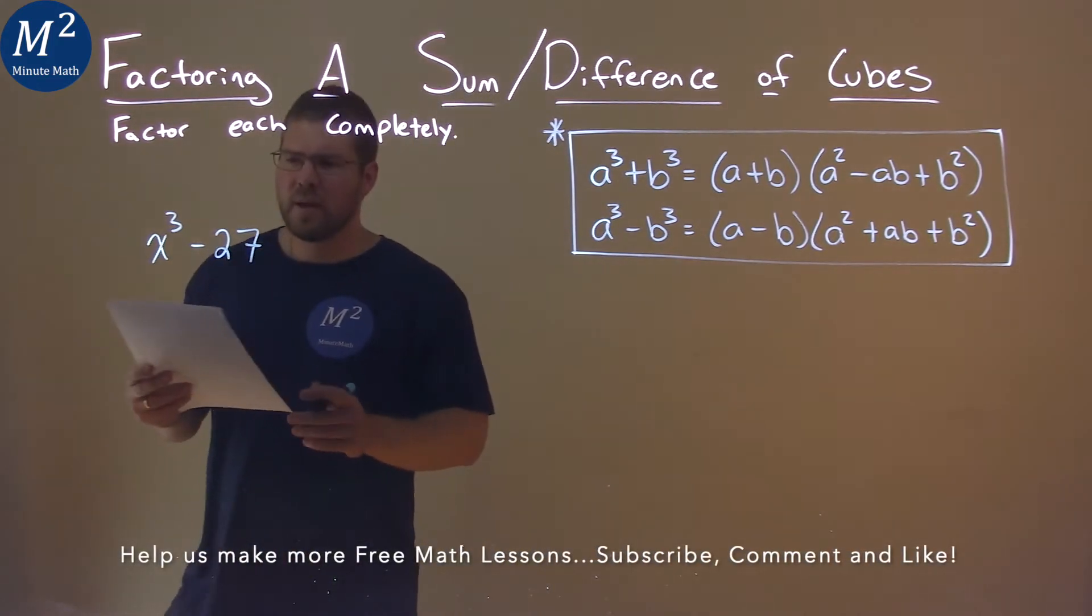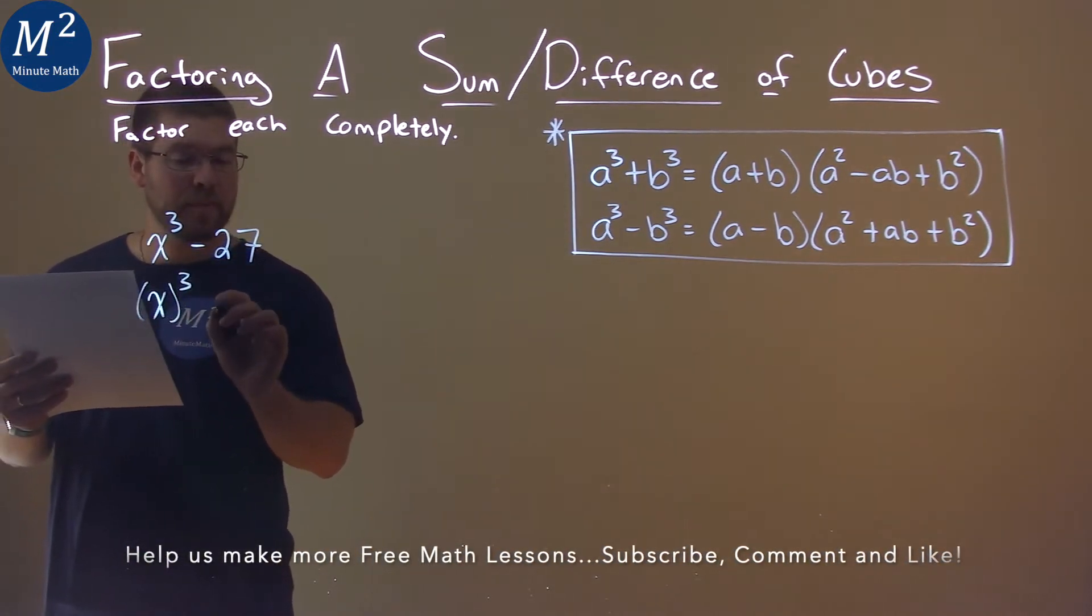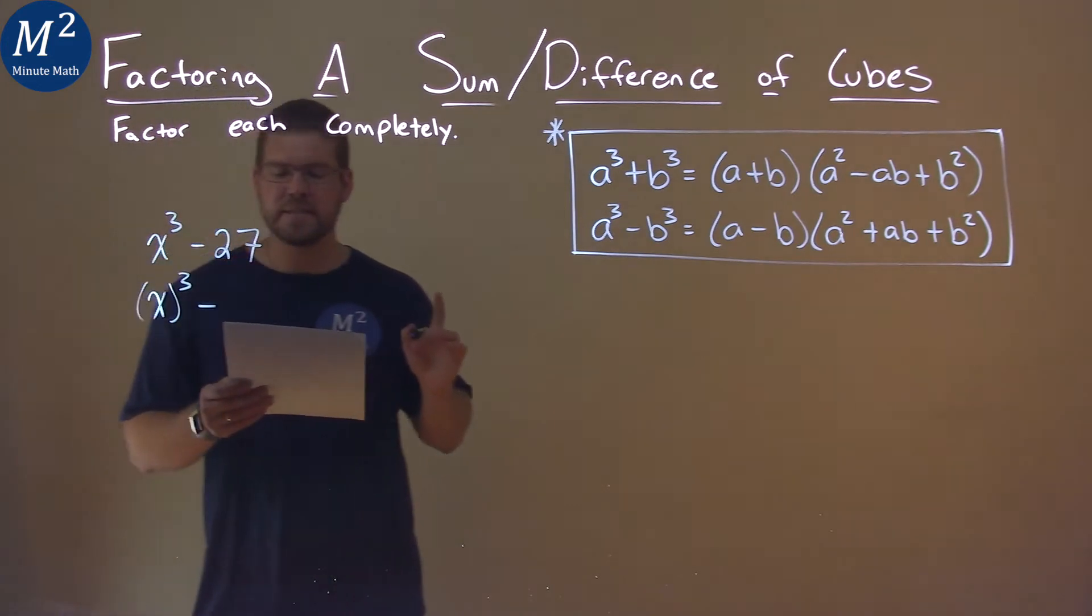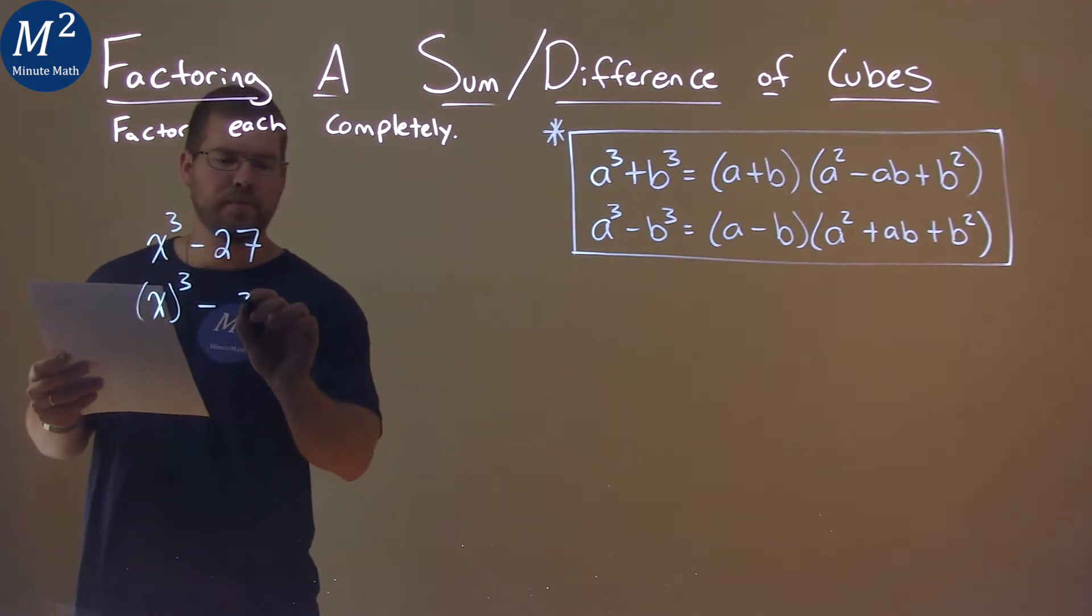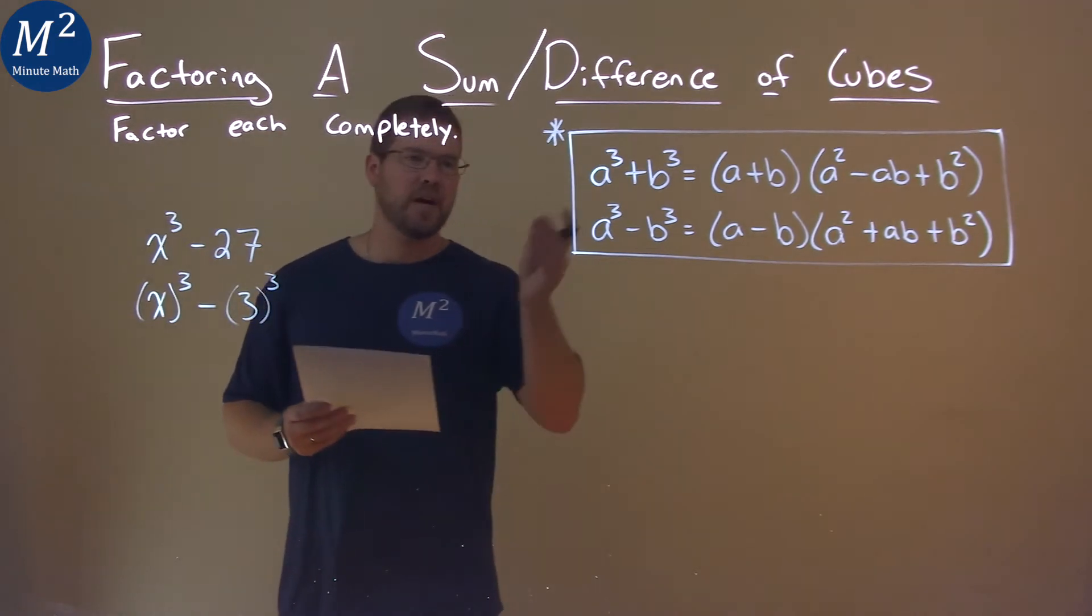First thing I'm looking at is x to the third power, subtracted by 27, which I know is 3 cubed. And so I can use the difference of cubes formula.